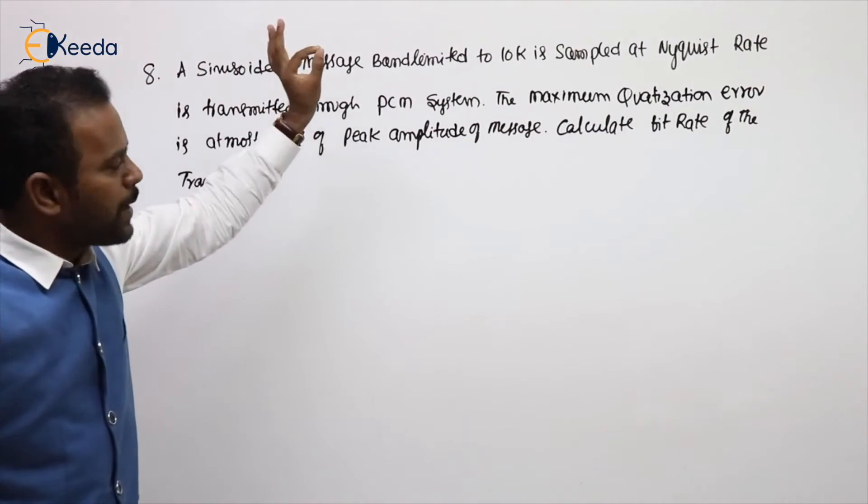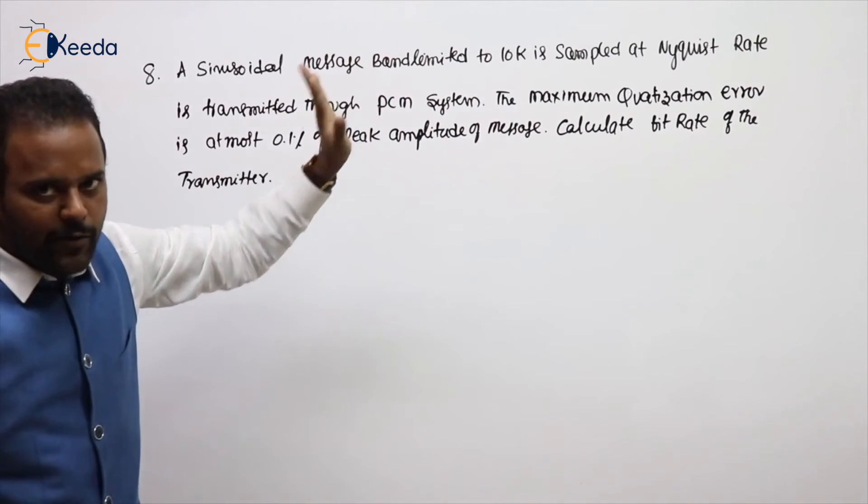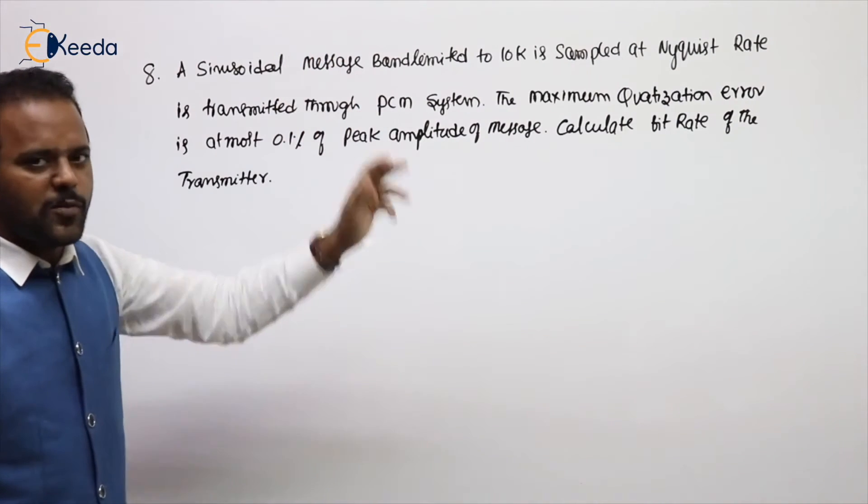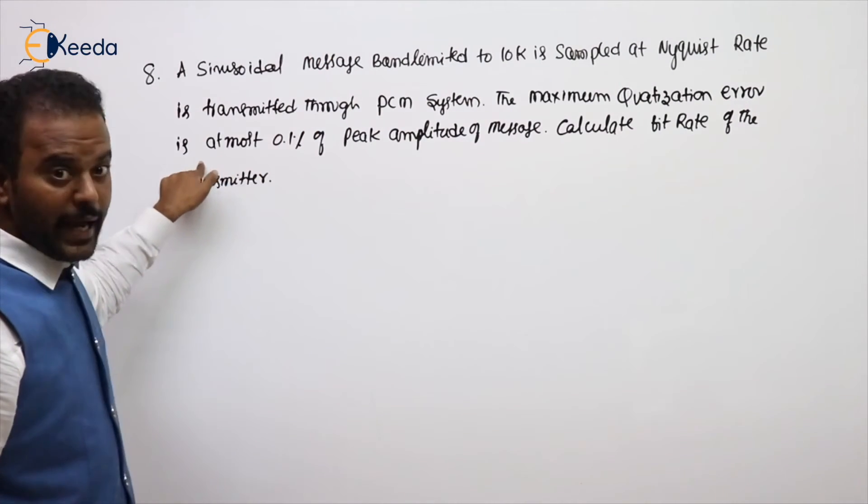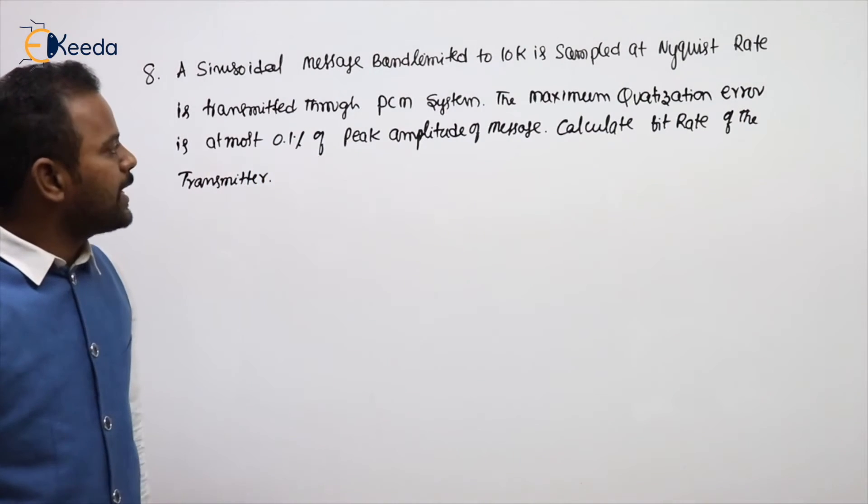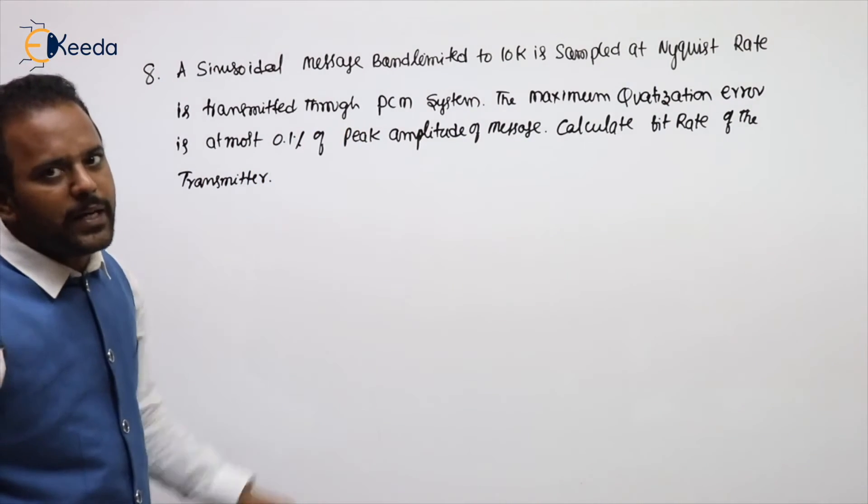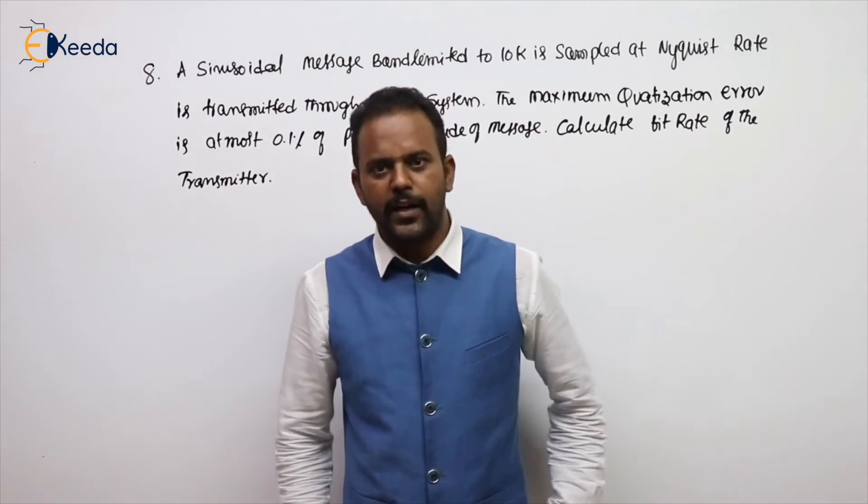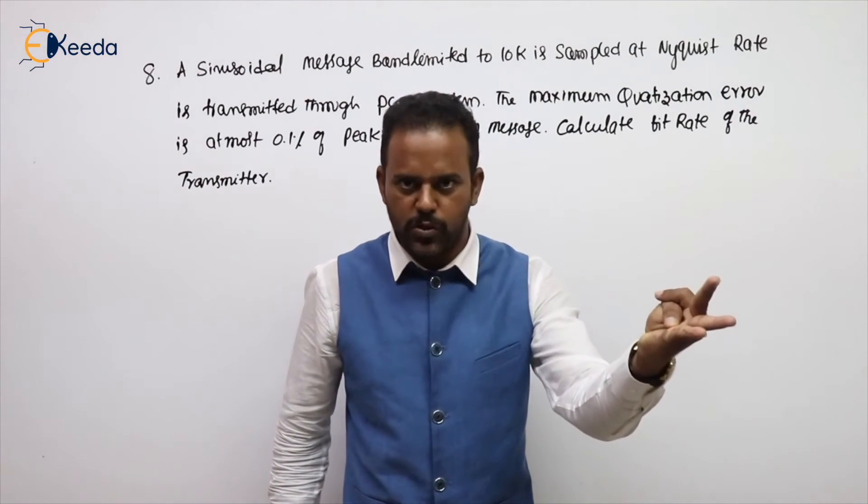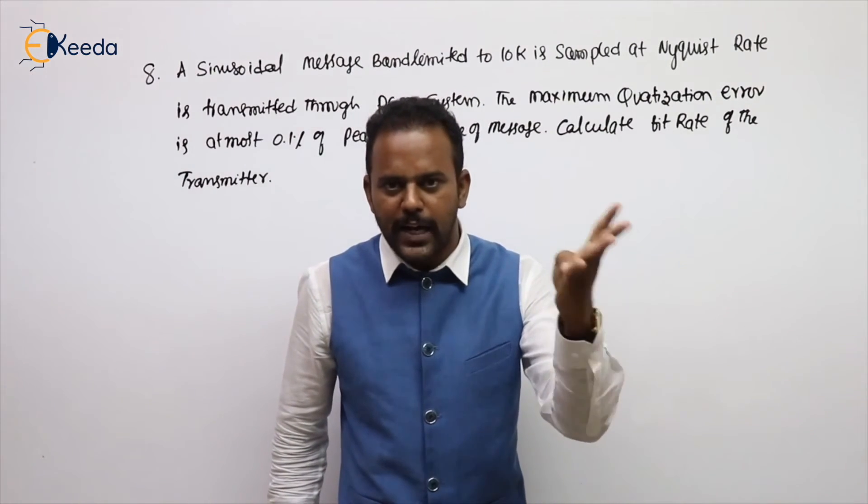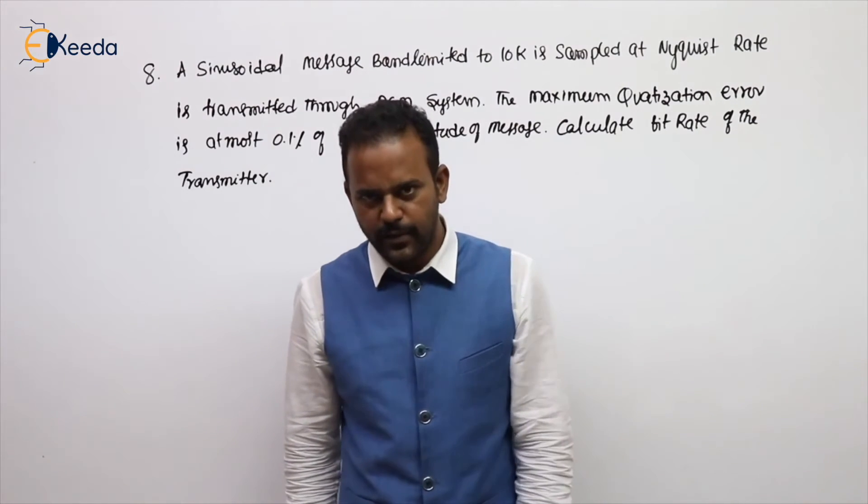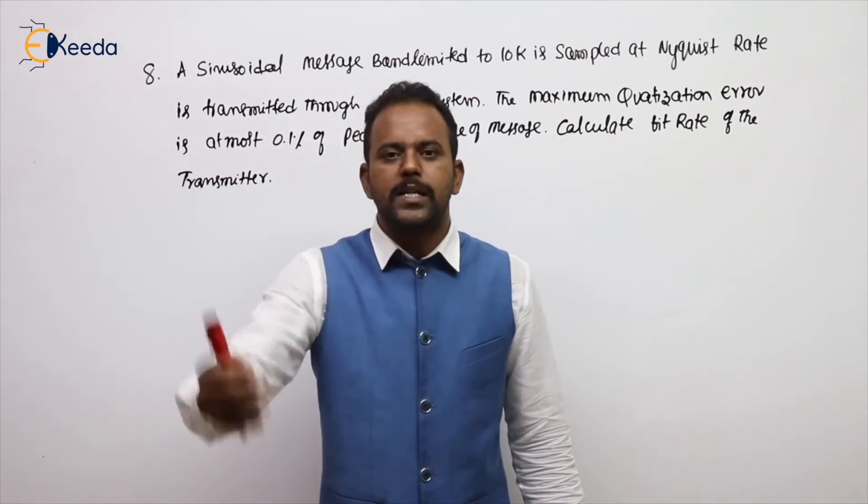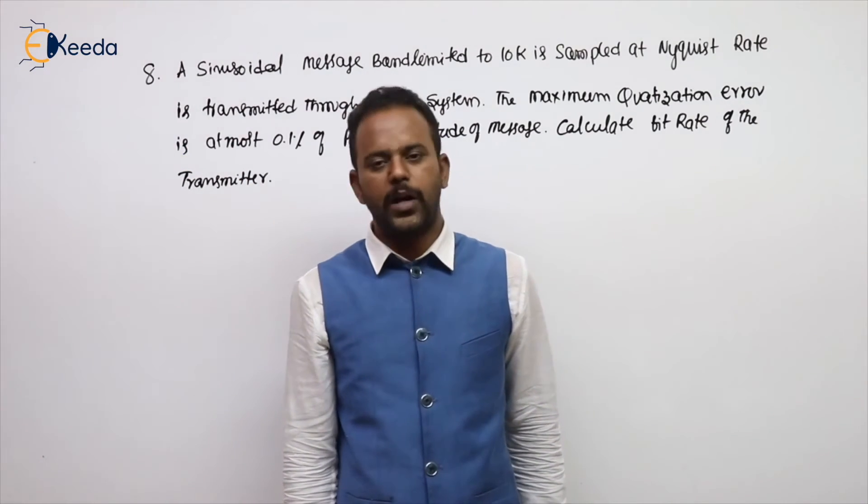See the next problem. A sinusoidal message band limited to 10K is sampled at Nyquist rate is transmitted through PCM system. The maximum quantization error is at most 0.1% of peak amplitude of message. Calculate bit rate of the transmitter. We already know two words is commonly will be there in our communication system: at least, at most. At least means minimum. At least you need to get 25 marks to qualify in the gate. At most you will get 100 marks in the gate. At least means that is a minimum, at most means that is a maximum.